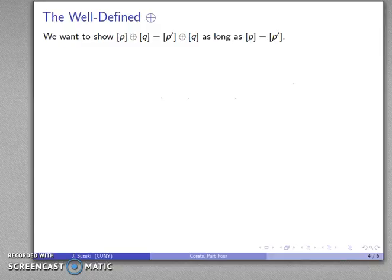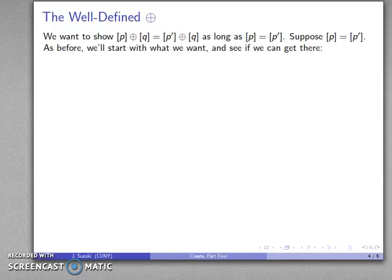And we'll go ahead and do that. We'll try and show that this is going to be true as long as P and P' represent the same coset. So suppose P and P' do represent the same coset. As we've done before, we're going to start with what we want and see if we can get there. We want these two to be the same thing, so let's go ahead and write that down as our goal.